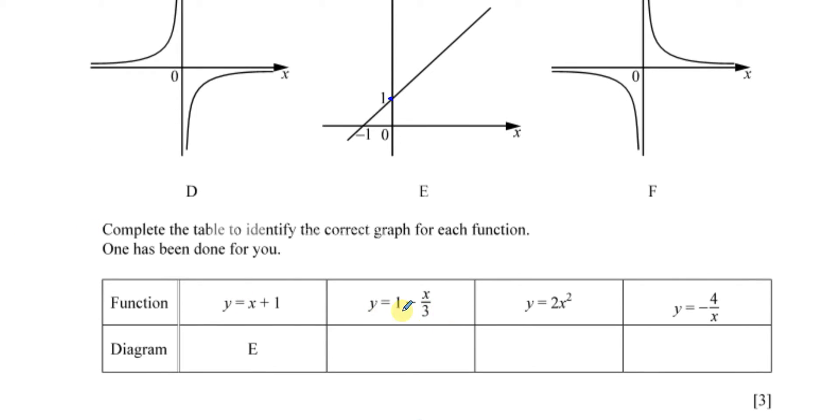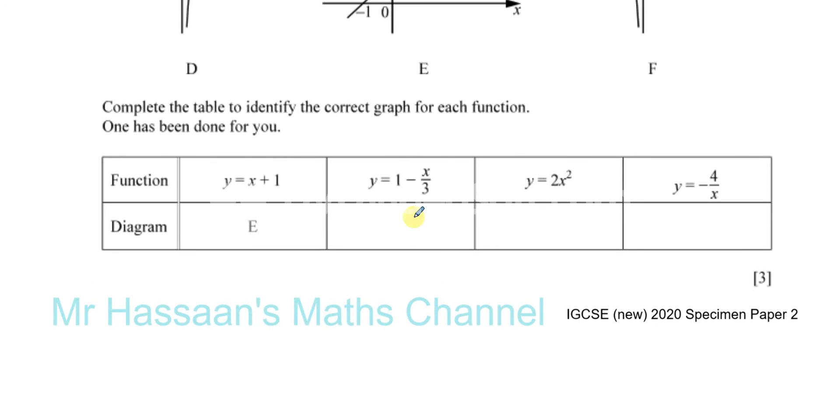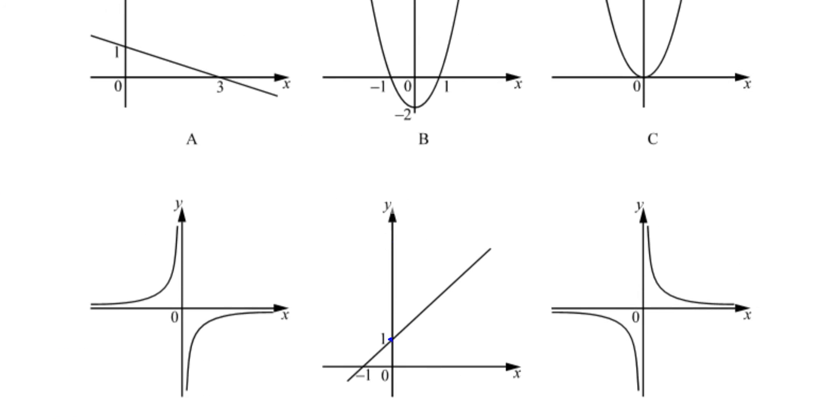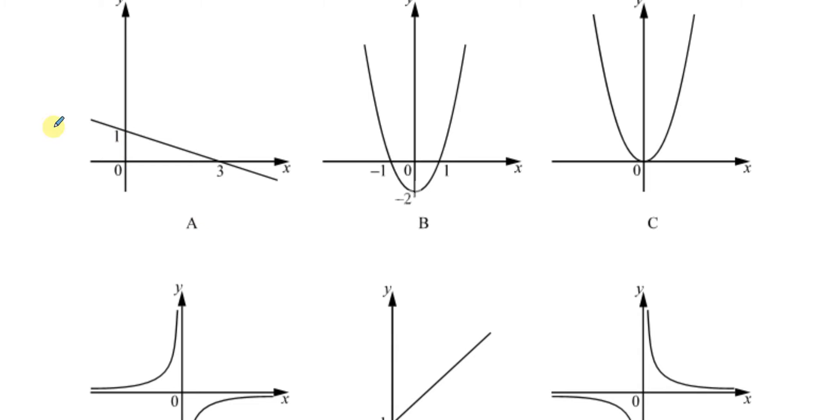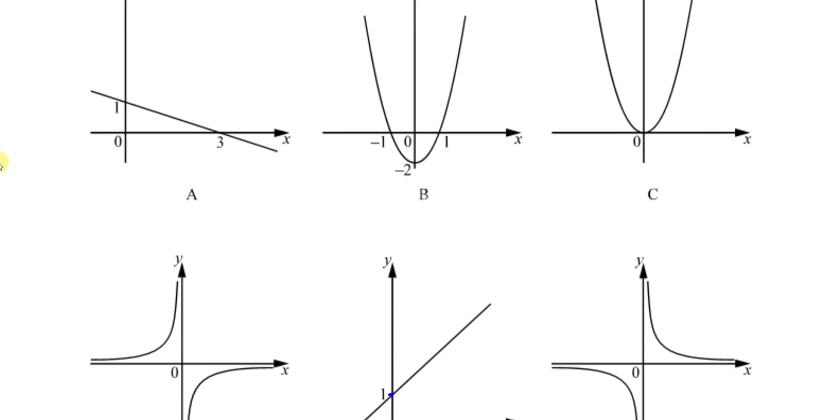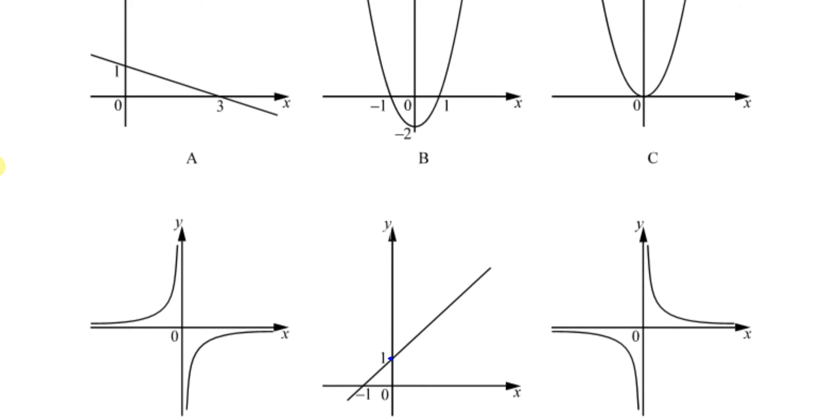Then it says y = 1 - x/3. This is again linear, so it's going to be a straight line. Out of all these graphs, the only one it can be is A. That's the only one it can be because all the rest are not linear—they're not straight lines.